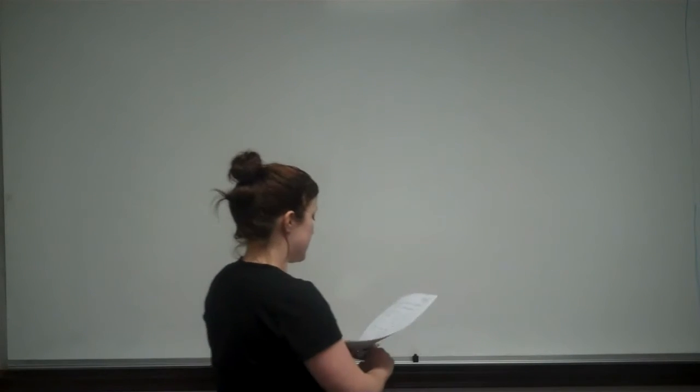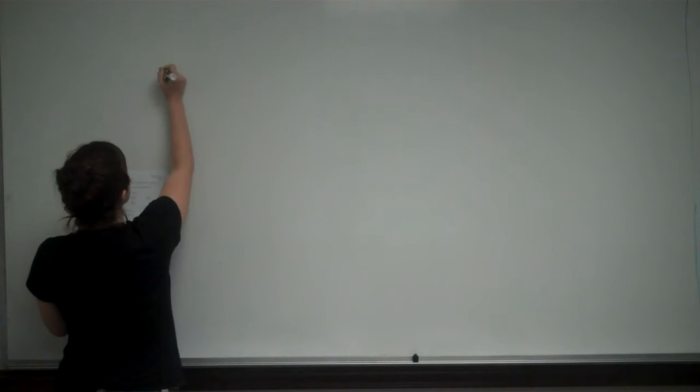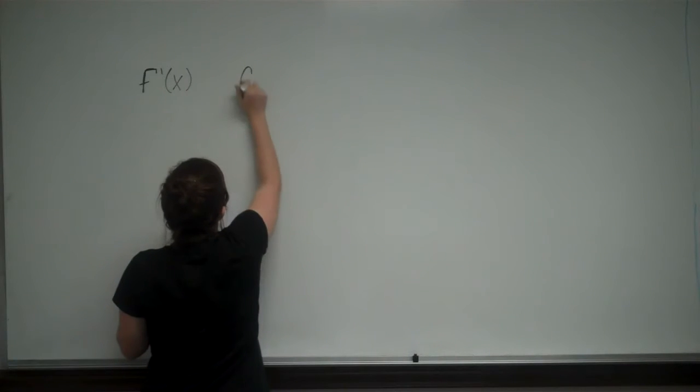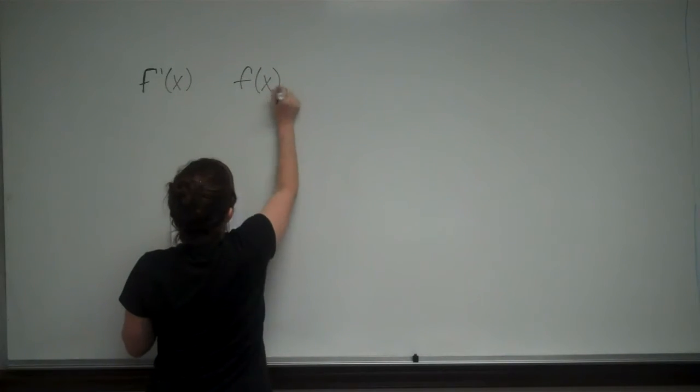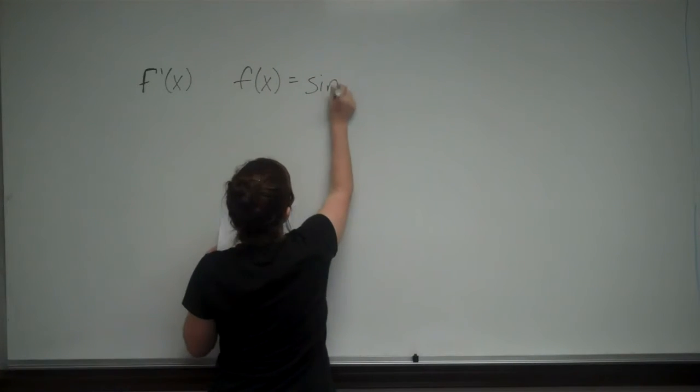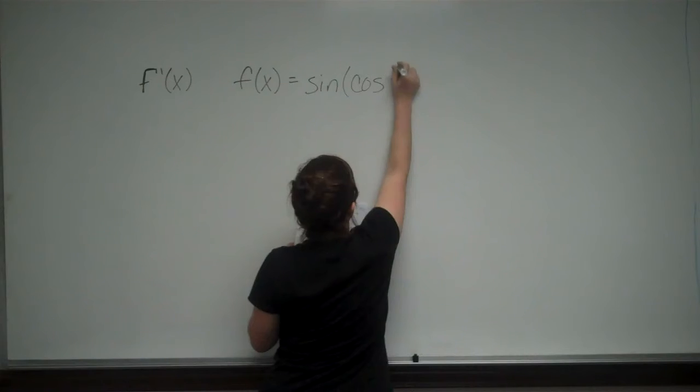This is problem number two. The test asks us to find f prime of x when we are given that f of x is equal to sine of cosine of x squared.